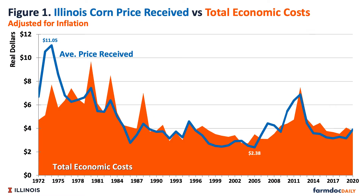Prices and Costs. Figure 1 shows the inflation-adjusted average Illinois corn price received versus total economic costs to produce corn. The highest adjusted average price received for corn was $11.05 per bushel in 1974, while the lowest adjusted price received was $2.38 per bushel in 2005. This compares to the nominal high and low values of $6.87 per bushel in 2012 and $1.54 per bushel in 1986 respectively. The highest adjusted cost was $9.70 per bushel in 1980, while the lowest adjusted cost was $2.72 per bushel in 2004.